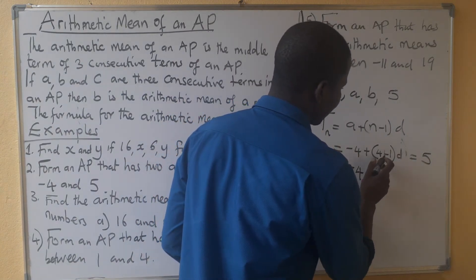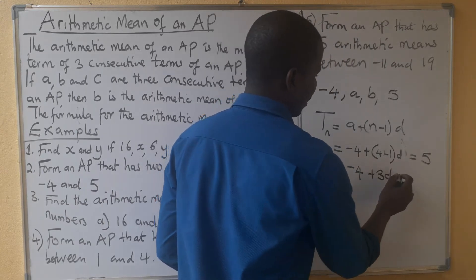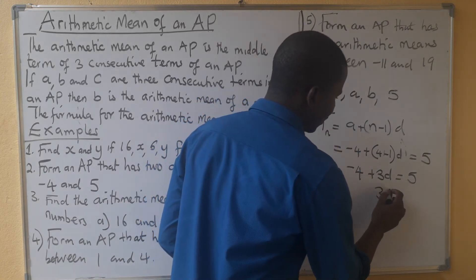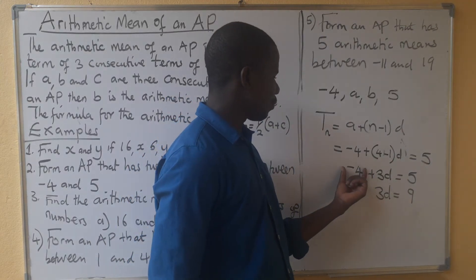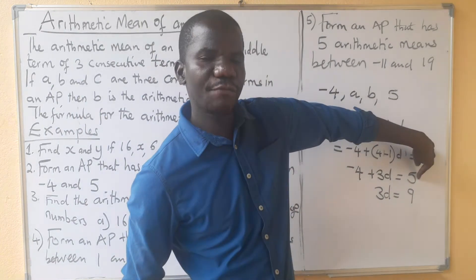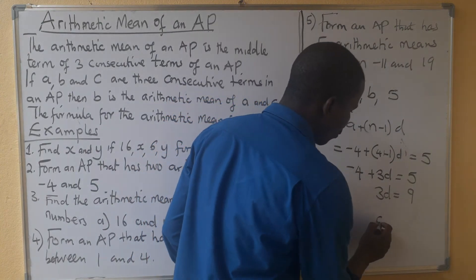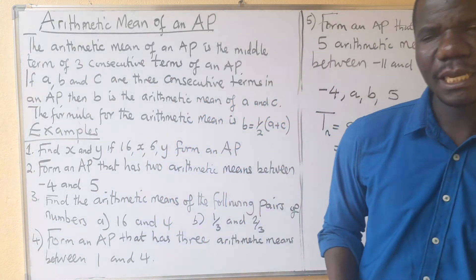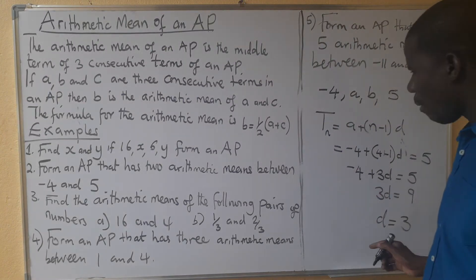We have negative 4 plus 3D equals 5. The additive inverse of negative 4 is positive 4, which adds to 5 to give us 9. Dividing both sides by 3, our common difference D equals 3.